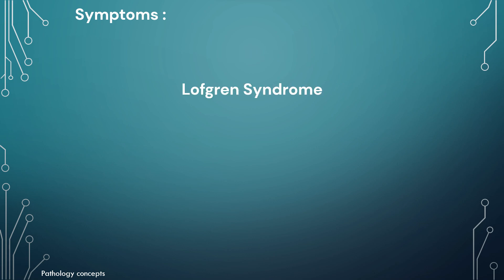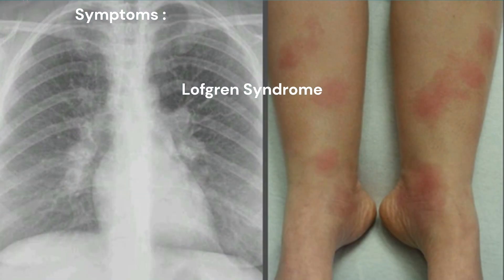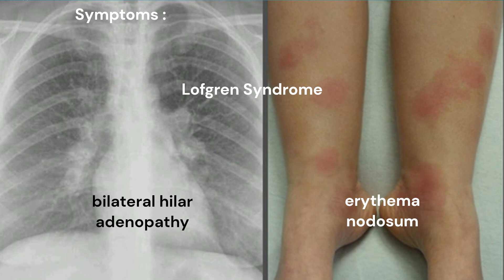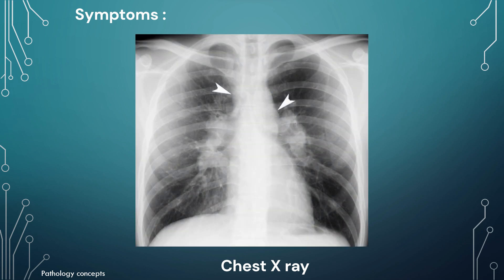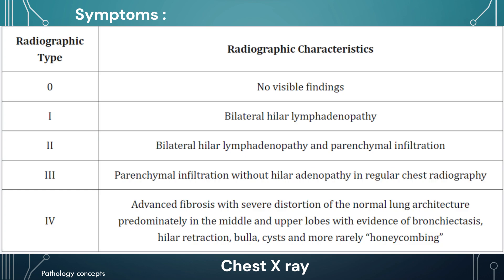Sarcoidosis is associated with Löfgren syndrome, where erythema nodosum and bilateral hilar lymphadenopathy are present — one of the classic and acute presentations of sarcoidosis. It is often diagnosed when aberrations are identified on a chest X-ray during routine examination, based on the presence of lung infiltration and lymphadenopathies.